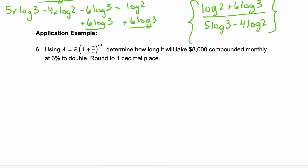One more example — an application example. We're using the equation A equals P times (1 plus r over n) raised to the power of nt to determine how long it will take $8,000 compounded monthly at 6% to double, rounding our answer to one decimal place. First we want to identify all of our variables. So 8,000 is the principal — how much money we're putting in. Compounded monthly tells us n equals 12. 6% is our r, and as a decimal that's 0.06.